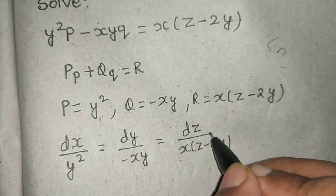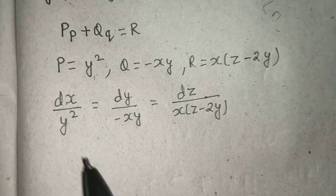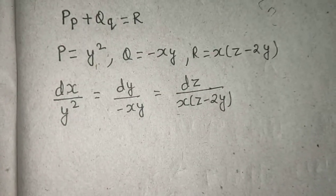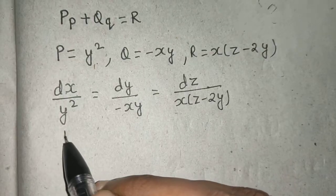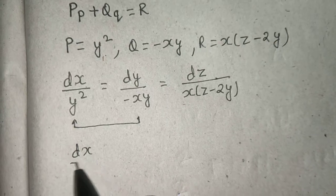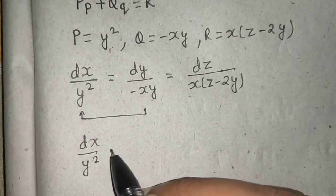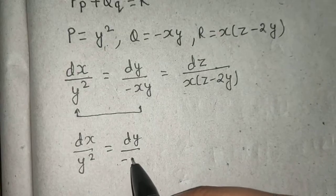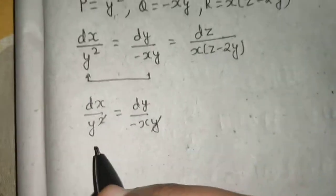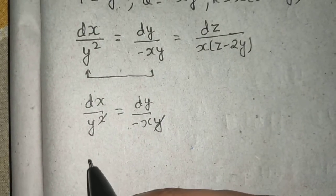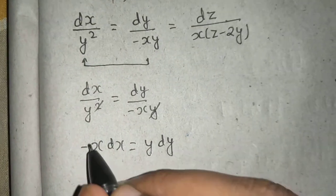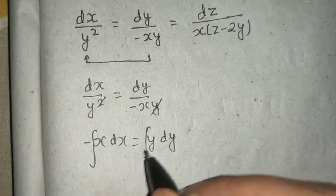First of all I will compare the first two, so I can write dx/y² = dy/(-xy). I can easily cancel one y. Now if I cross multiply I will get -x dx = y dy.